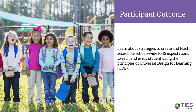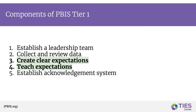The image on this slide depicts a group of school-age children with and without disabilities on a playground. In our Tier 1 series, we review all five components in creating a universal foundation. In this video, we will focus on components three and four: creating and teaching clear expectations that are accessible to each and every student.